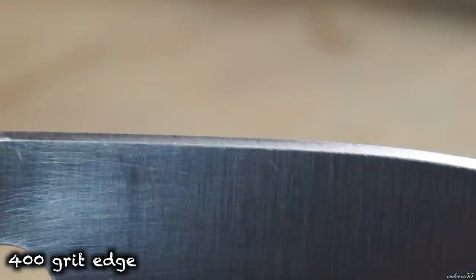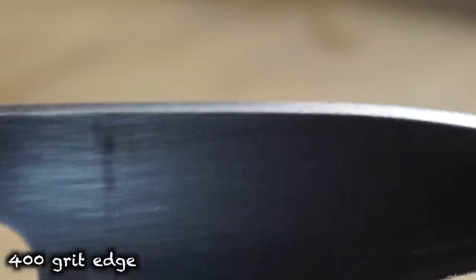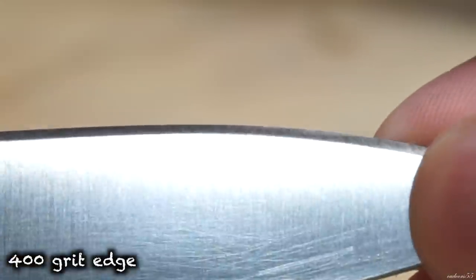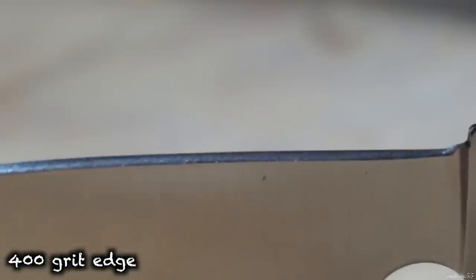And this is what our edge looks like after reprofiling on a 400 grit stone. Technically if you were to strop the knife here we could end up with a sharp knife. But we might as well just take it all the way to the end and restore the knife back to its original condition.